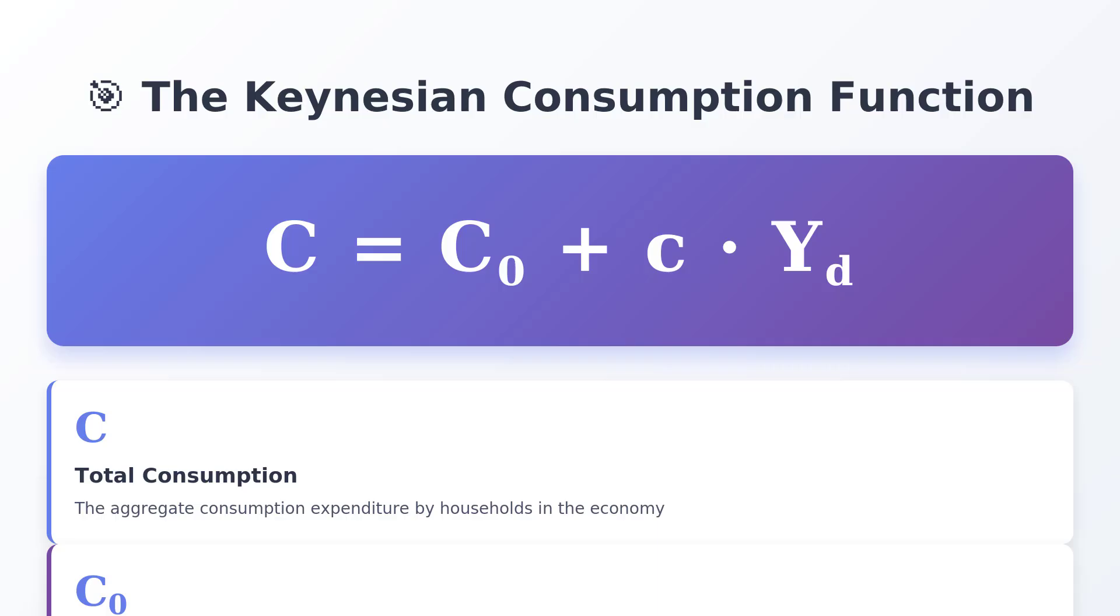But that sounds like prioritizing mathematical elegance over economic reality. My concern isn't about complexity. It's about a failure to predict. If the central bank, trying to cool an overheated economy, hikes the rate R by 150 basis points, and your model C equals F of YD predicts only a minimal change in consumption because income hasn't fallen yet, you've fundamentally failed your forecasting mandate.